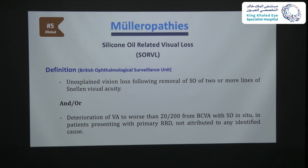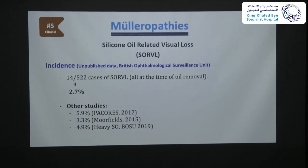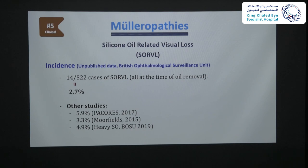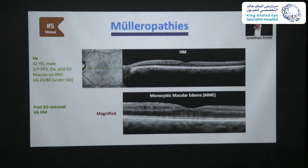A relatively standardized definition of silicone oil-related visual loss from the British Ophthalmological Surveillance Unit defines it as unexplained visual loss following removal of silicone oil of two or more lines of Snellen visual acuity and/or deterioration of VA to worse than 20/200 from BCVA with silicone oil in situ in patients presenting with primary RRD, not attributed to any identified cause. Using this definition, they found 14 out of 522 cases (2.7%). The incidence was 5.9% in a Pan-American Collaborative Retina Group study, 3.3% by a Moorfields group, and 4.9% using heavy silicone oil.